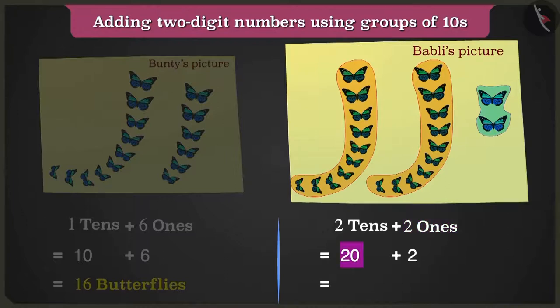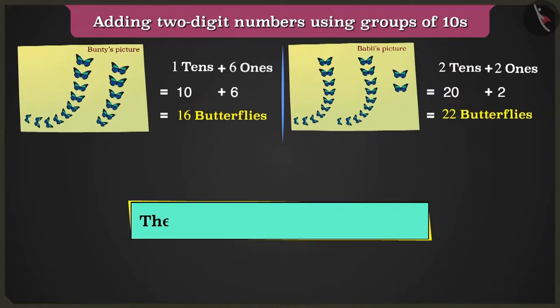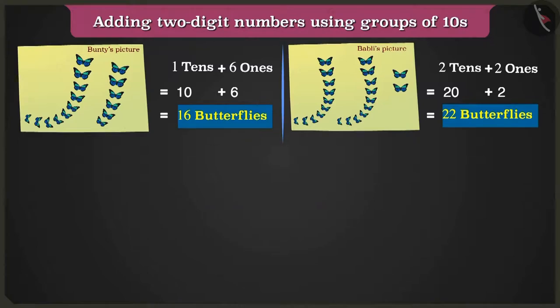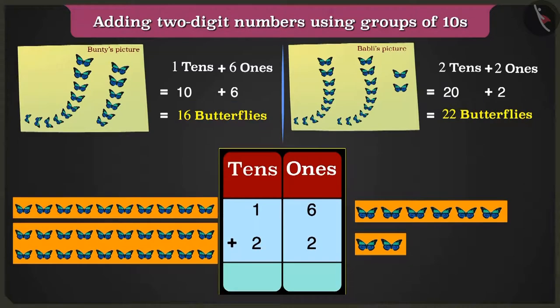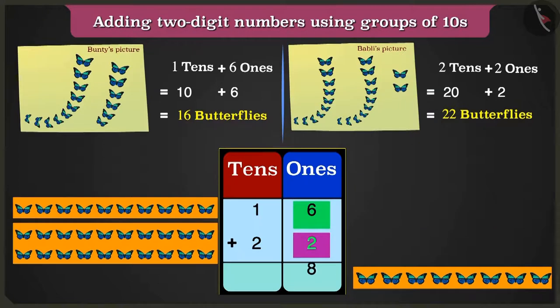So how many total butterflies are here? Let's count them. To add sixteen and twenty, let us write these numbers in the table of tens and ones. Let us add the numbers in the ones box first. Six ones have to be added to two ones. Count after six, seven and eight. So six ones plus two ones is eight ones. Let's write eight in the ones box.